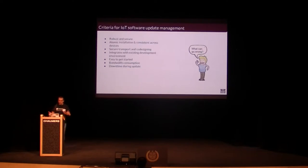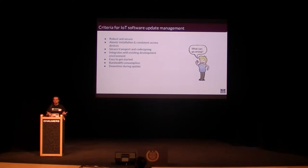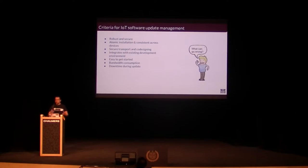Some of the criteria for deploying over-the-air software updates: if you have distributed devices around the globe, the solution you're using must be robust and secure. That means if something goes wrong, there needs to be a failsafe mechanism so you can recover your devices — so they are not bricked — and they always go back to a working state.